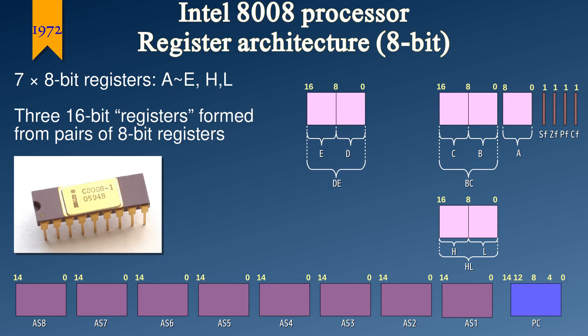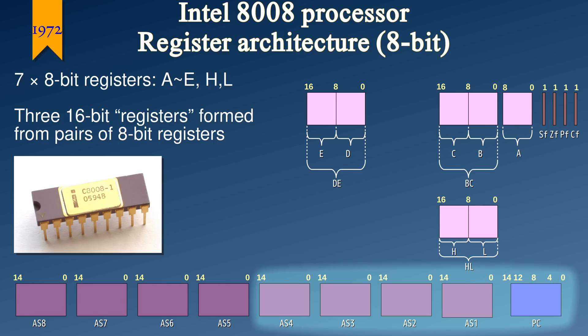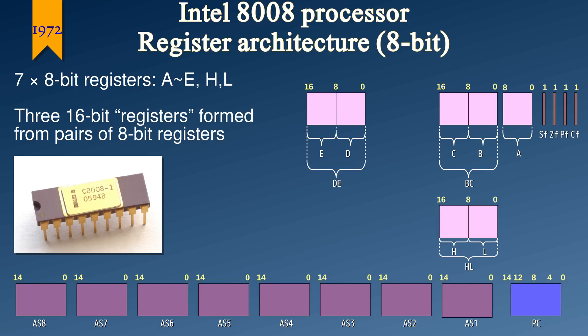H and L stand for high and low respectively. A possible reason why this register had a different naming scheme than the others was because it had a separate role — it was the only register that could be used for indirect memory access. The 8008 now had four flags: besides the carry flag, there was now an even parity flag, a zero flag, and a sign flag. The stack depth was increased from four units to a total of nine units, and the memory address width was increased from 12 bits to 14 bits.